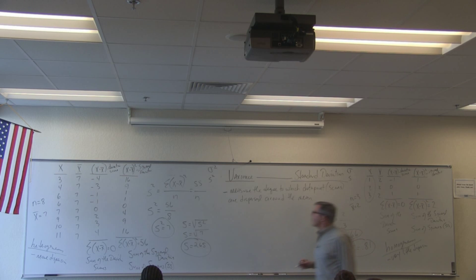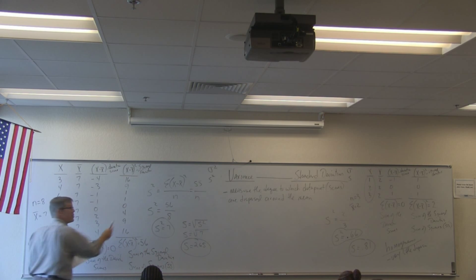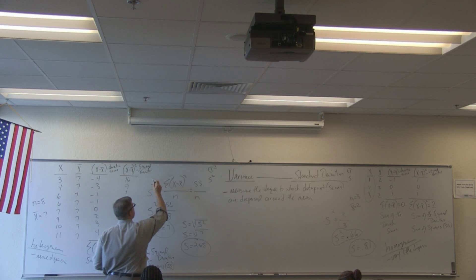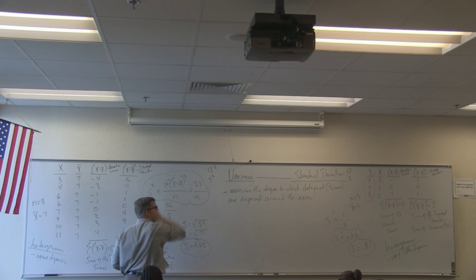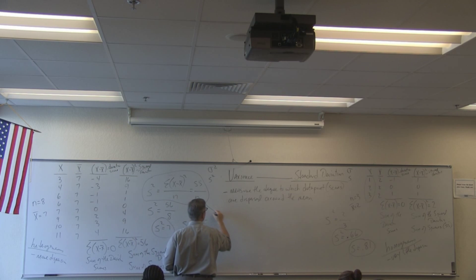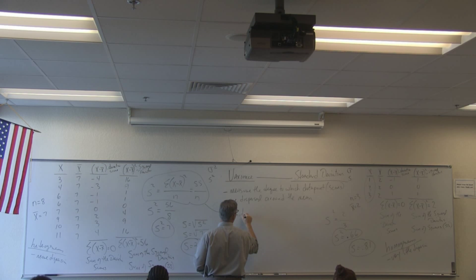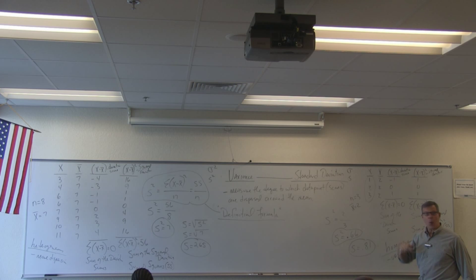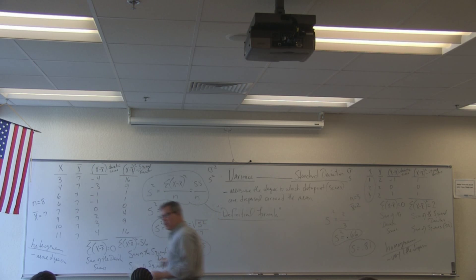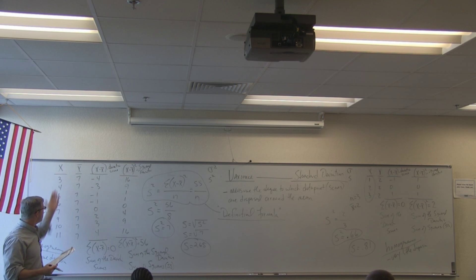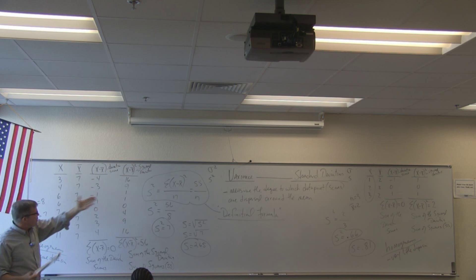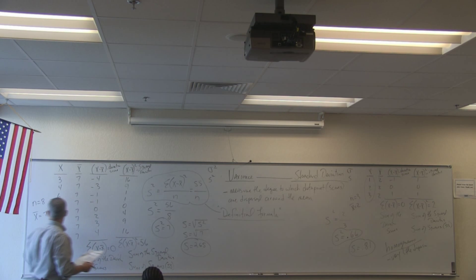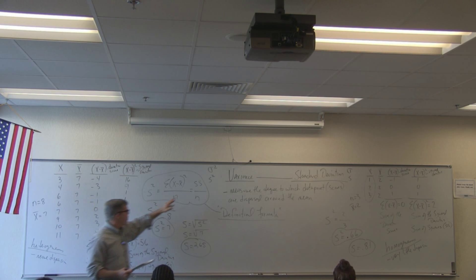What we just did here is called the definitional approach, or the definitional formula. It's called that because it pretty much defines what we're doing — it breaks the sum of the squared deviations over N down into little steps where variance is ultimately the ratio of the sum of squares to N.